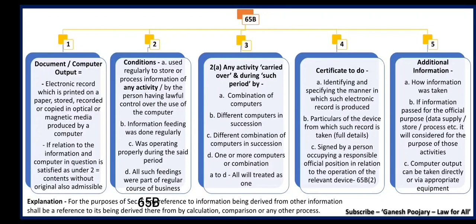The third condition: it was operating properly during the set period. For example, if you are collecting CCTV footage of a particular date and time, such CCTV should be operating properly — only then it becomes admissible evidence, otherwise it is tampered evidence. The fourth condition: all such feedings were part of a regular course of business. Capturing such CCTV footage was a regular part of that apartment or office — not installed for that particular day or time, but routine. These are the four conditions which need to be satisfied to make computer output admissible without even the original.